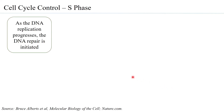What also happens in the S phase is that as DNA replication progresses, if any mistake occurs during replication, the DNA repair system is initiated. Both S-CDK and DDK help in ensuring that the DNA repair mechanism is functioning.